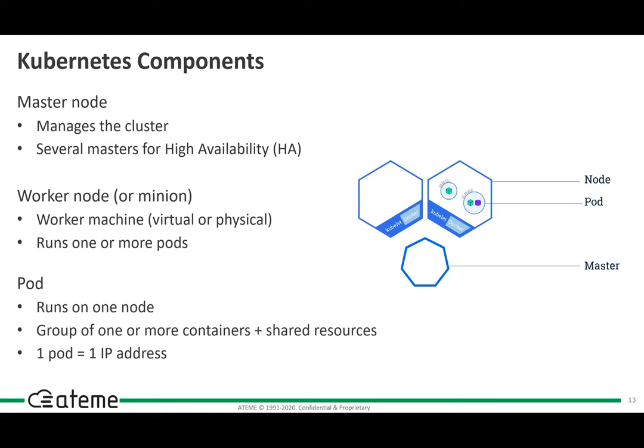If you have to remember some key Kubernetes terms from this presentation, it should be: master node — the brain of Kubernetes; worker nodes — where containers are running; cluster; and pod — the abstraction of a container in a Kubernetes context.